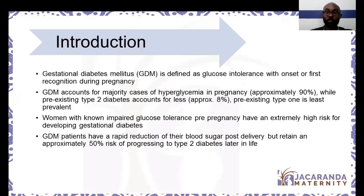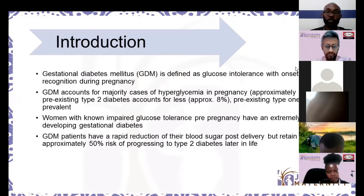Gestational diabetes mellitus — which we'll focus on today — is defined as glucose intolerance which is either first recognized in pregnancy or which starts in pregnancy. It accounts for the majority of cases of hyperglycemia in pregnancy: approximately 90% of patients with high blood sugars in pregnancy fall into the gestational diabetes category. Pre-existing type 2 diabetes accounts for about 8%, and pre-existing type 1 diabetes is about 2%.